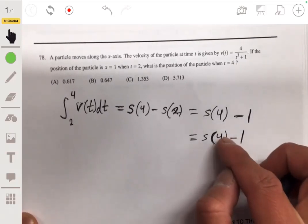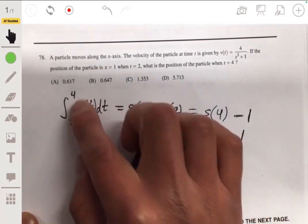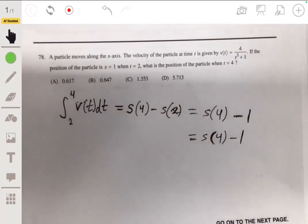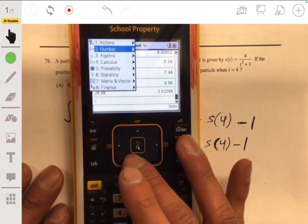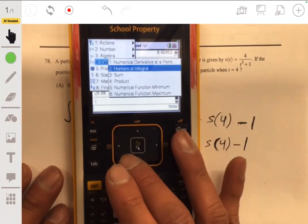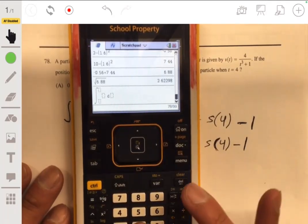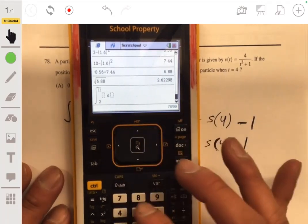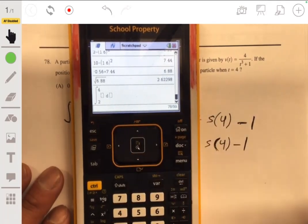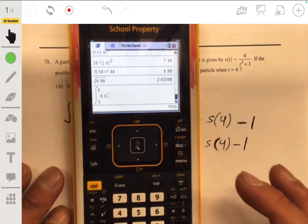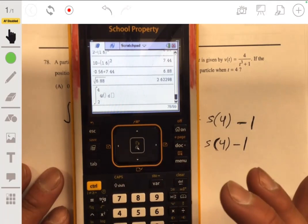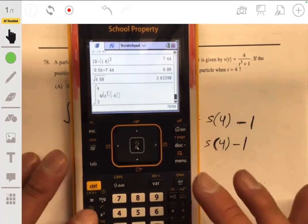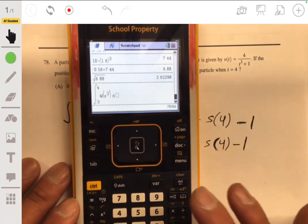So let's first find what s of four is. Let's first integrate this in our calculator. So we can use our calculus function with the numerical integral from two to four of four over t cubed plus one, or we'll just have x cubed plus one instead.